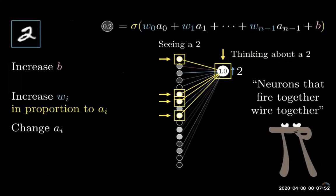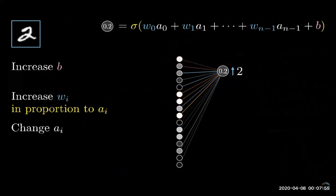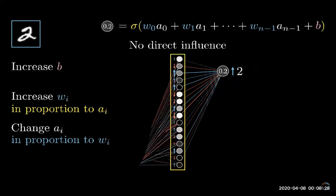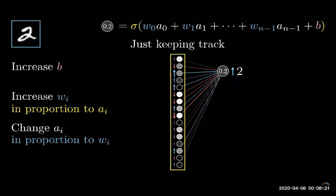The third way that we can help increase this neuron's activation is by changing all the activations in the previous layer. Namely, if everything connected to that digit two neuron with a positive weight got brighter and everything connected with a negative weight got dimmer, then that digit two neuron would become more active. You're gonna get the most bang for your buck by seeking changes that are proportional to the size of the corresponding weights.